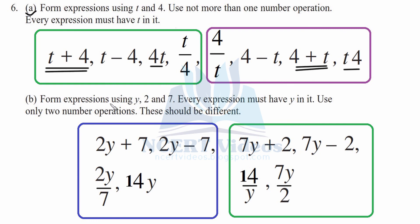B part: form expressions using three numbers y, 2, and 7. We will first associate 2 with y, and 7 added afterwards. So: 2y plus 7 and 2y minus 7. And 2y divided by 7 can also be done. If we multiply 7 into 2 we get 14, and multiply it with y. Now using 7 and y combination: 7y plus 2 and 7y minus 2 can also be there. Then 14 by y — we divide it. And the last expression can be 7y by 2. This is the way to find expressions for three numbers.